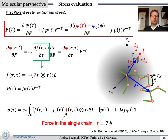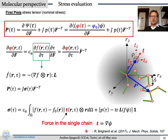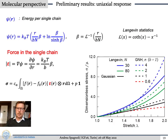From the evolution of the phi function, we can work out the stress components, particularly the first Piola-Kirchhoff stress, which is a nominal stress. We can also work out the true stress, that is the Cauchy stress, which depends on the force in the single chain. These are preliminary results of the micro-mechanical model I have briefly described.